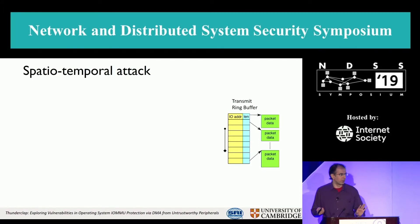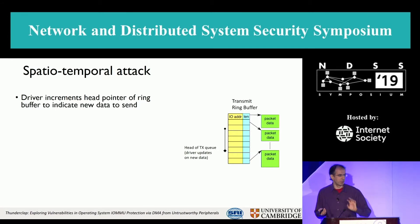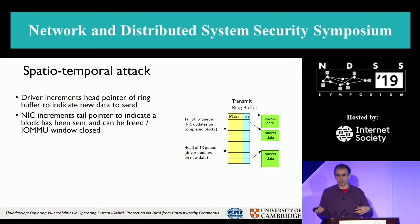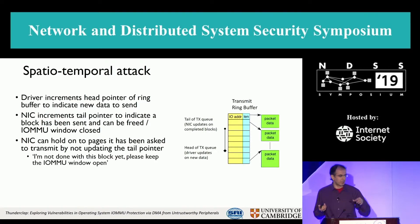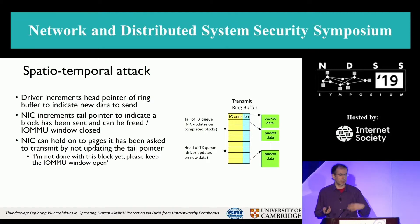We can also do a spatiotemporal attack. When the driver is going to send some data, it puts data in the ring buffer and increments the TX queue pointer. The NIC increments the tail pointer to say it's finished with some data. But the NIC can hold on to that pointer, preventing it from updating and keeping the IOMMU windows open, then go fishing to see what other data turns up over time.